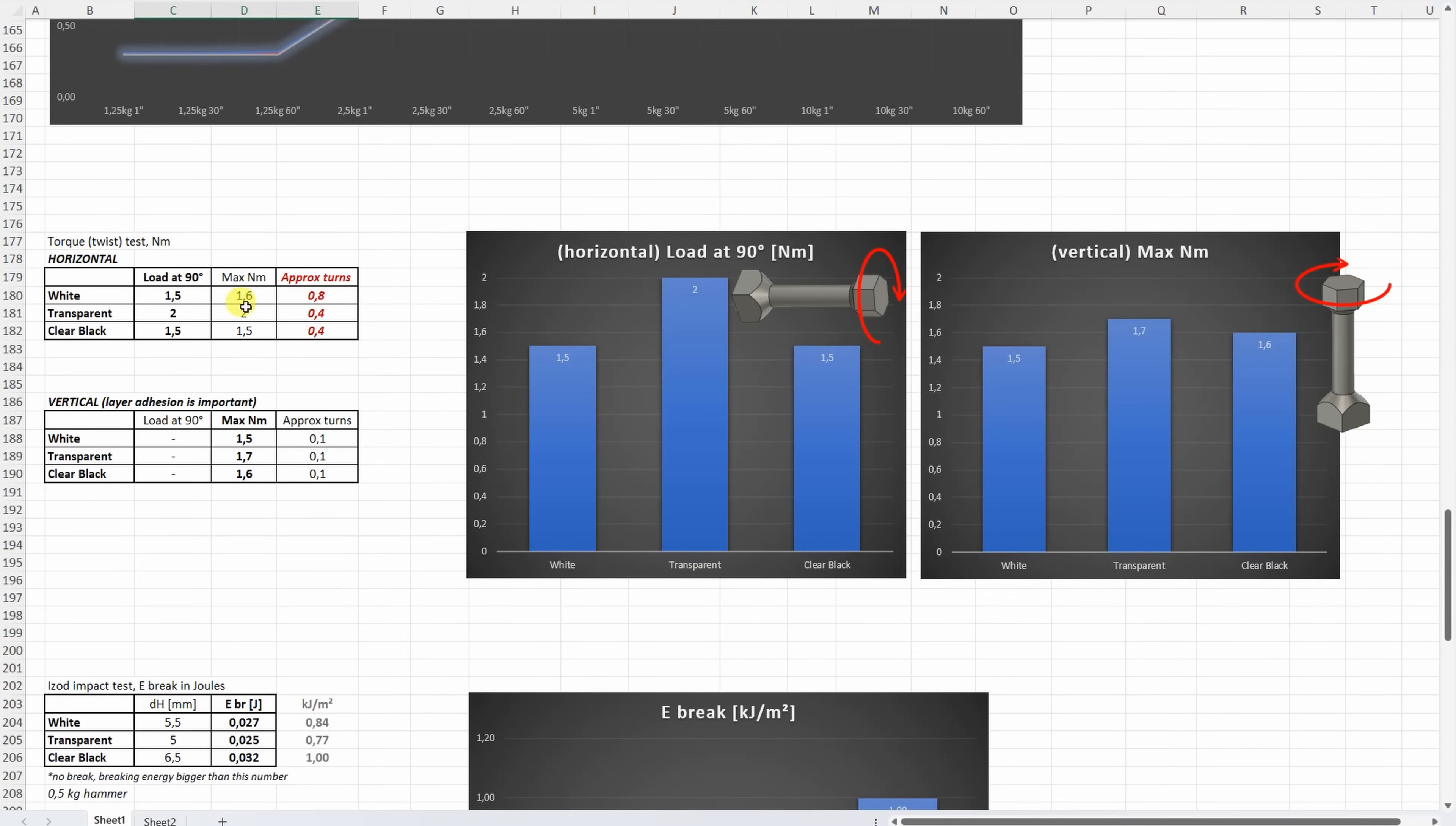On the torque or twist test, on horizontally printed objects, this is the load at 90 degree rotation. Again, a big difference between the colors. Here the transparent was much stronger. But not only between the numbers, but between the brake type. You can check the footage.